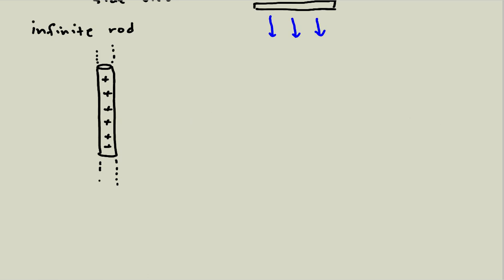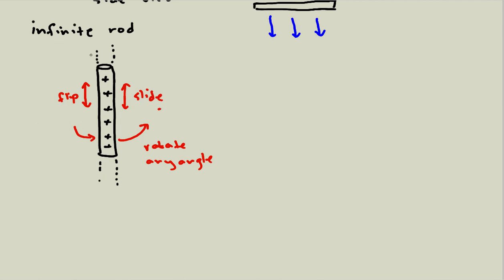Again, let's think about what symmetries the rod has. I can rotate it any angle around its axis and it looks exactly the same. I can also flip it top to bottom, translate it up and down, or flip it the other way. You might think that last one isn't a useful distinction when you can already rotate it, but it actually is.